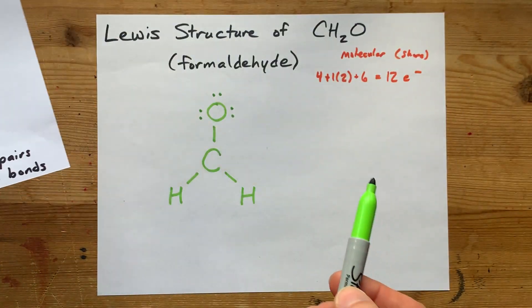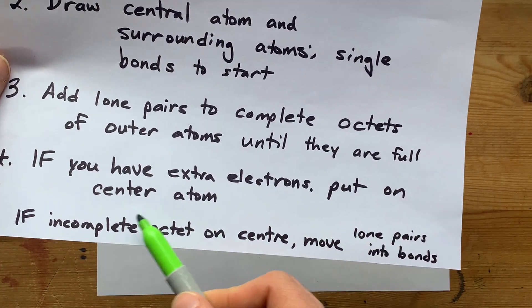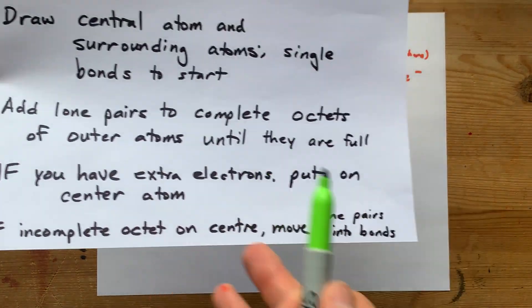If you have extra electrons to deal with, which we don't, we'd put them on the central atom, but we don't, so we won't.